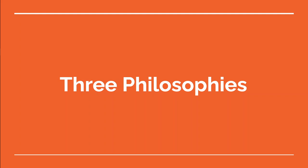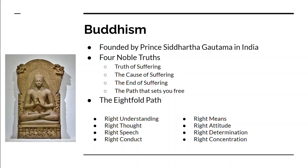Now there are three philosophers we need to talk about. The first is Buddhism and the Buddha. Buddha lived from either 563 to 483 or 480 to 400 BC, depending on the source. He was originally known as Prince Siddhartha Gautama of India. He lived in a palace his entire young life until his early 20s, when he left the palace for the first time and realized that not everybody had life as well as he did. So he decided to meditate, and came up with the idea of the Four Noble Truths.